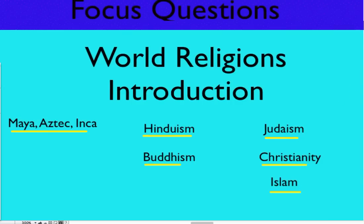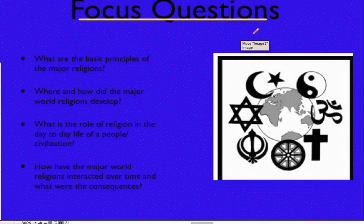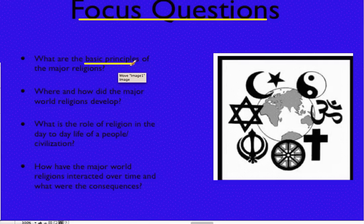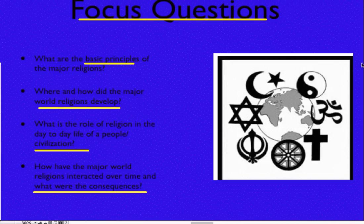Now, how we're going to cover this unit is a series of focus questions, and that's going to lead us up to what's called the essential question. The first focus questions are pretty simple: What are the basic principles of the major religions? In order to answer the eventual essential question, you're going to be able to answer these four: Where and how did the major world religions develop? What is the role of religion in the day-to-day life of a people or a civilization? And how have the major world religions interacted over time and what were the consequences? This one right here is probably going to be key.